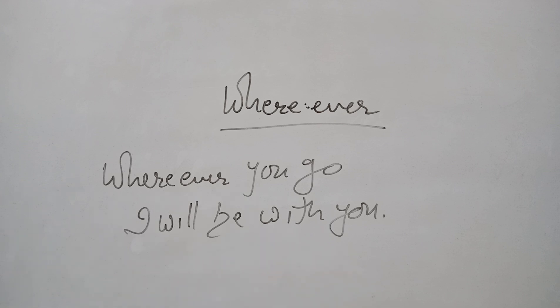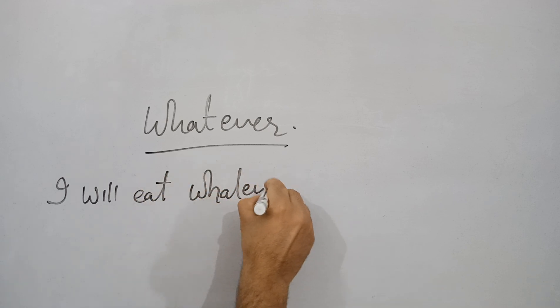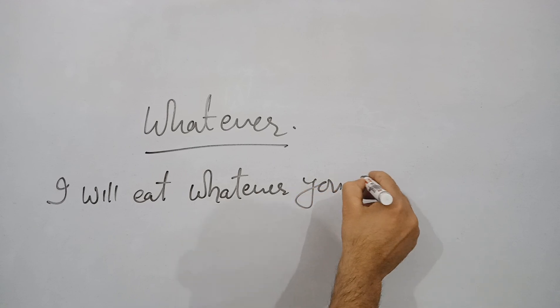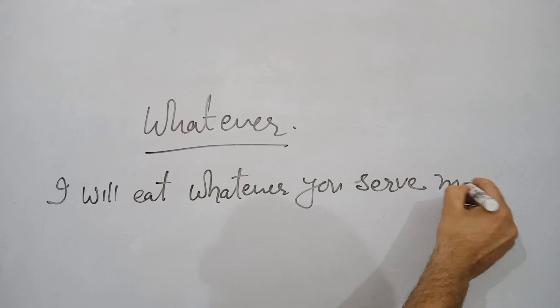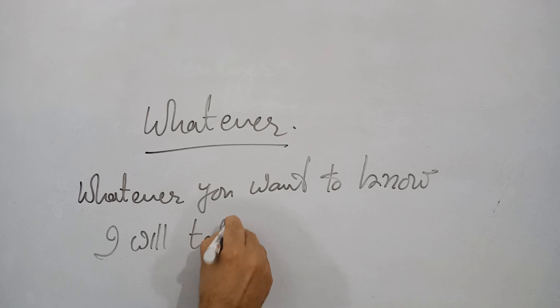Next is whatever, 'jo bhi, jo bhi cheez'. I will eat whatever you serve me. Tum jo bhi mujhe serve karoge, main woh kha lunga. I will wear whatever shirt you will give me. Whatever you want to know, I will tell you. So high level sentence: Whatever government wants to do for the poor people, it can do easily.